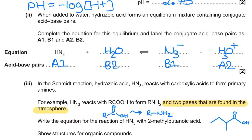Next, we're allocating conjugate acid-base pairs for the reaction of HN3 with water. The products are N3⁻ (deprotonated HN3) and H3O⁺ (protonated H2O). Conjugate acid-base pairs are two species that interchange by the loss or gain of a proton — choose one species from either side where the only difference in chemical formula is an H⁺ ion. HN3 and N3⁻ form one pair, with HN3 as the acid. H2O and H3O⁺ form the other pair, with H3O⁺ as the acid and H2O as the base, labelled A1/B1 and A2/B2.